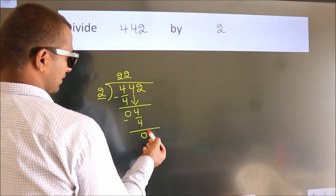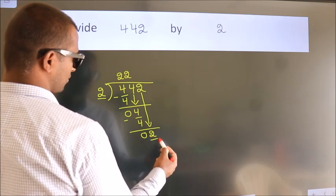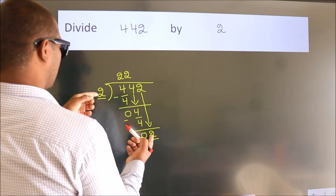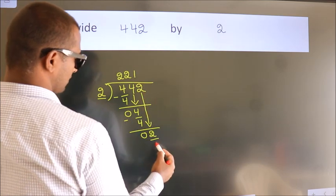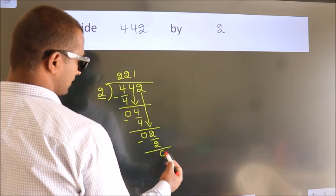After this, bring down the next number, so 2 down. When do we get 2? In the 2 table, 2 times 1 is 2. Now we subtract and we get 0.